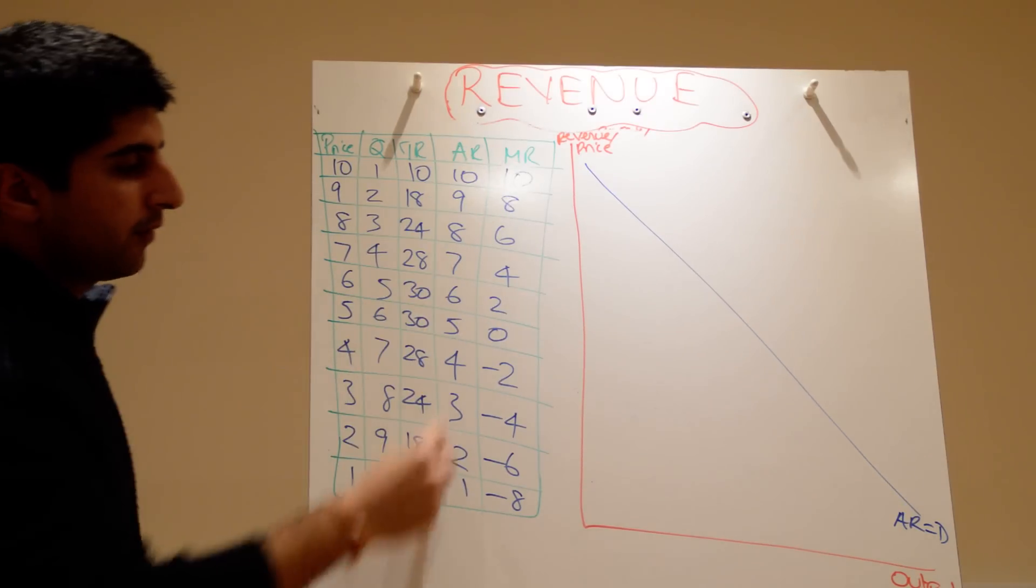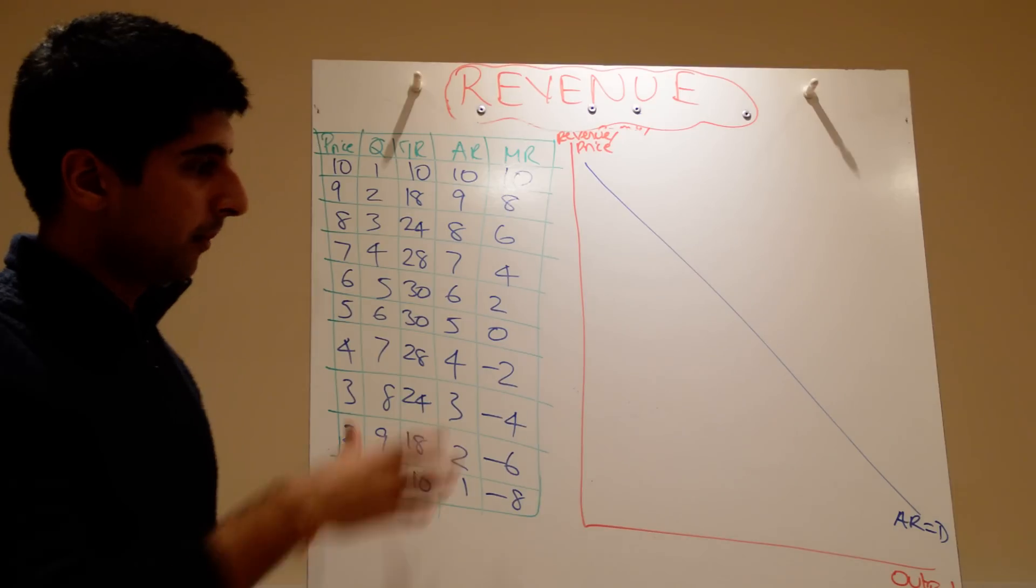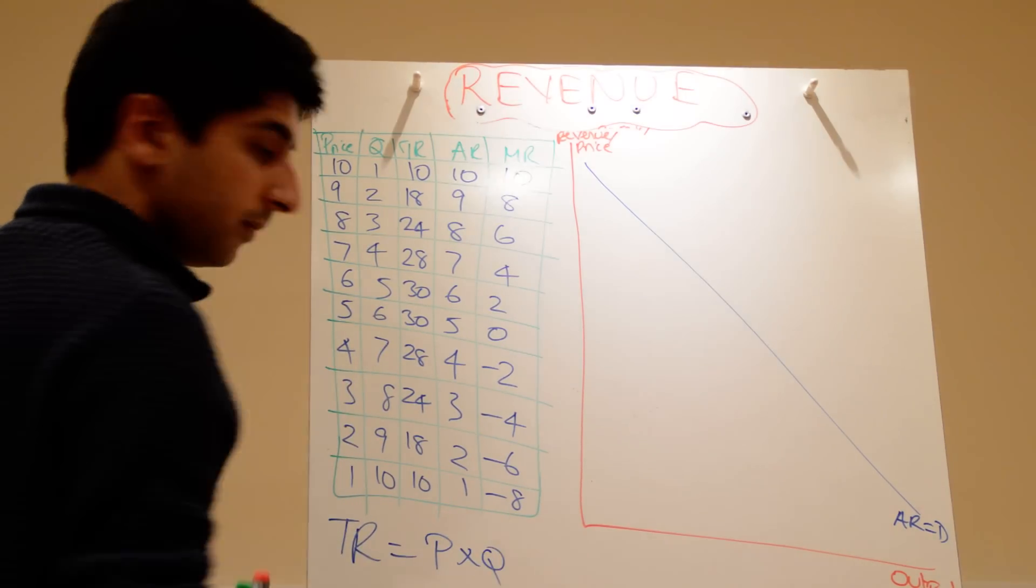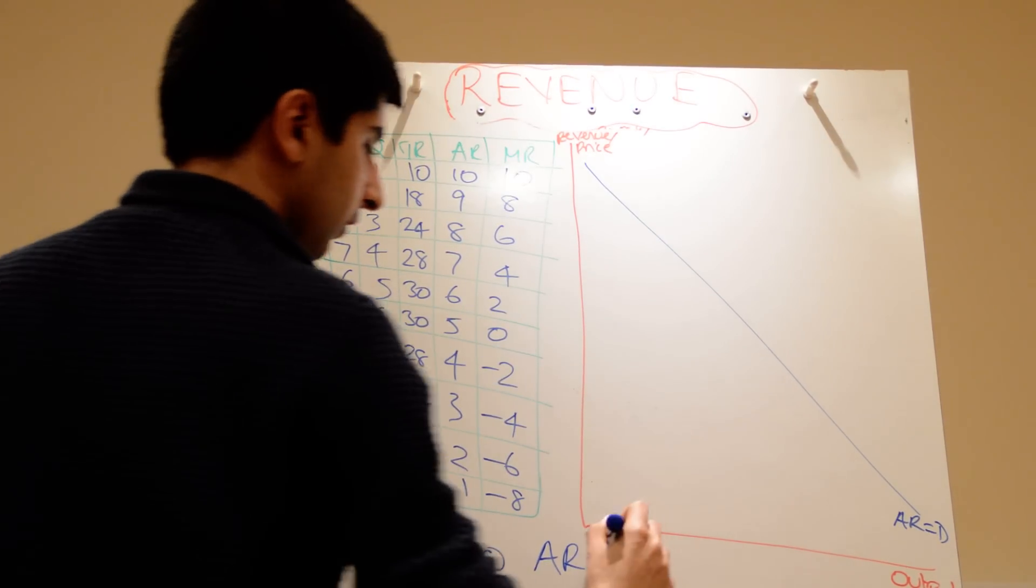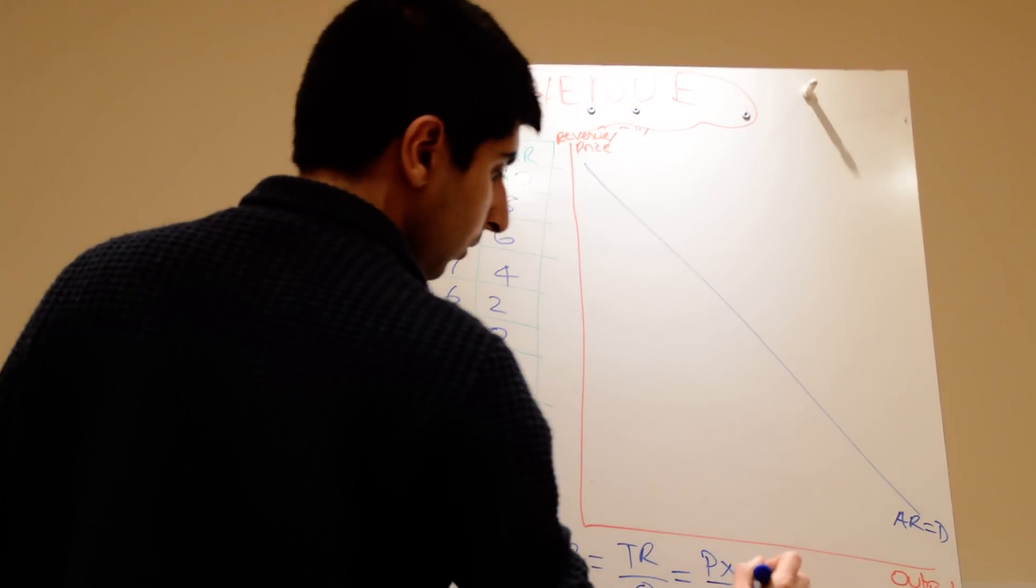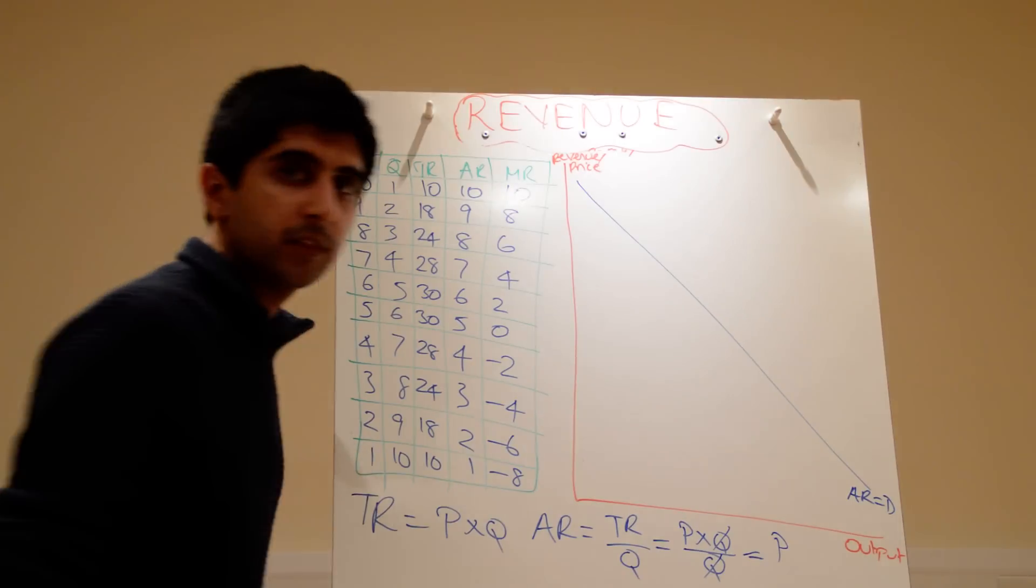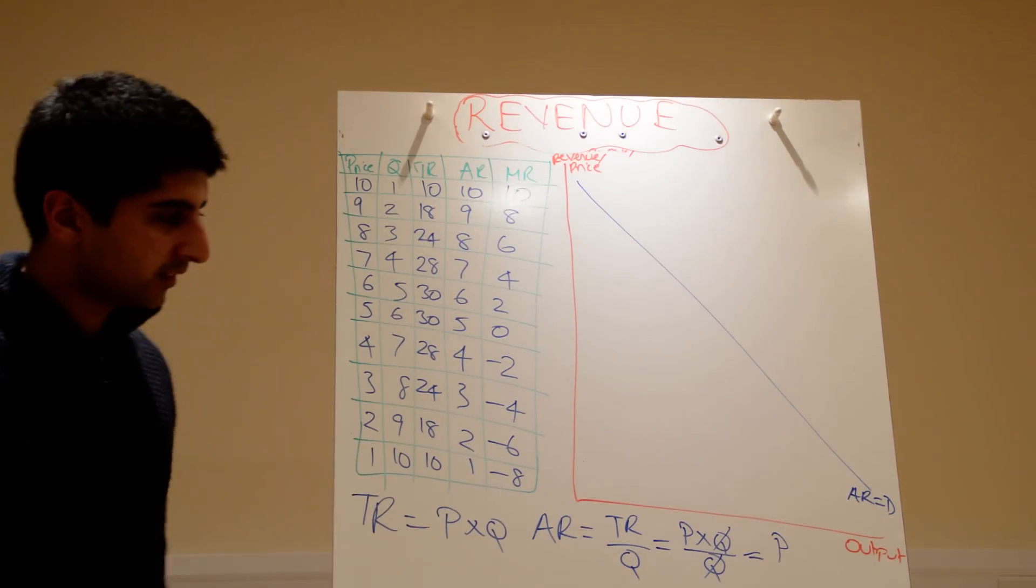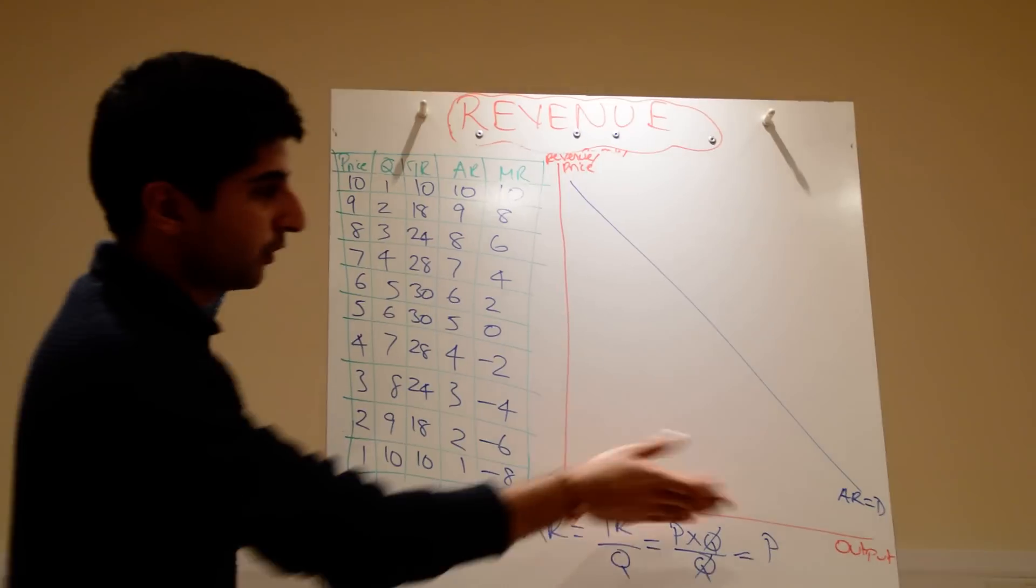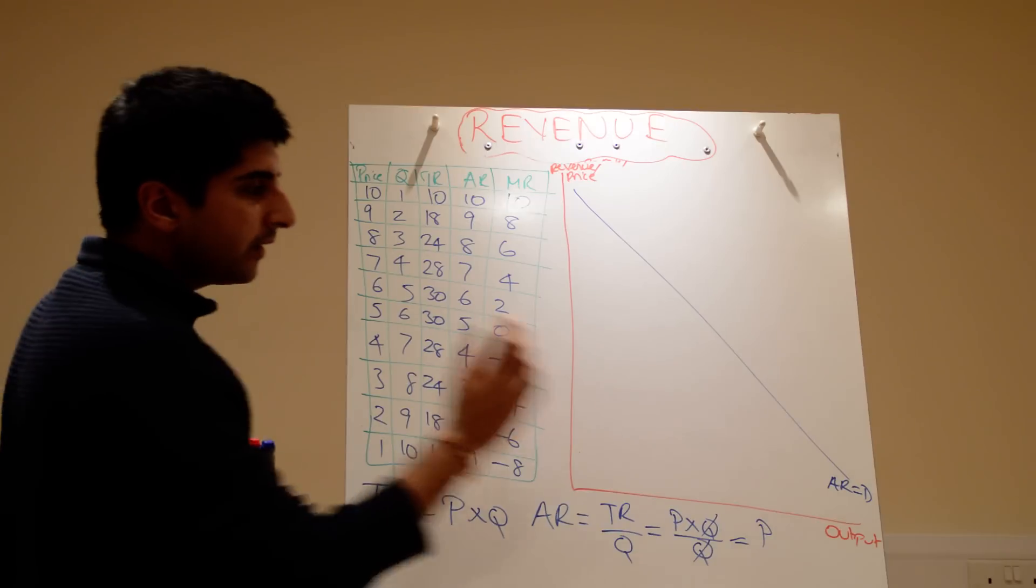And also, if you look carefully, our average revenue is also equal to our price. Look at that column. It matches our price column exactly as it did in the previous grid. Why is that? Well, we know total revenue is just price times quantity. We also know that average revenue is just total revenue divided by quantity. Break that down further. Total revenue is P times Q, so it's P times Q over Q. Cancel off the Qs and we're left with P. So we know that average revenue is also the price. So that is also what the curve tells us. It also tells us the price at different levels of output. So there's also the price. A very useful thing to know.